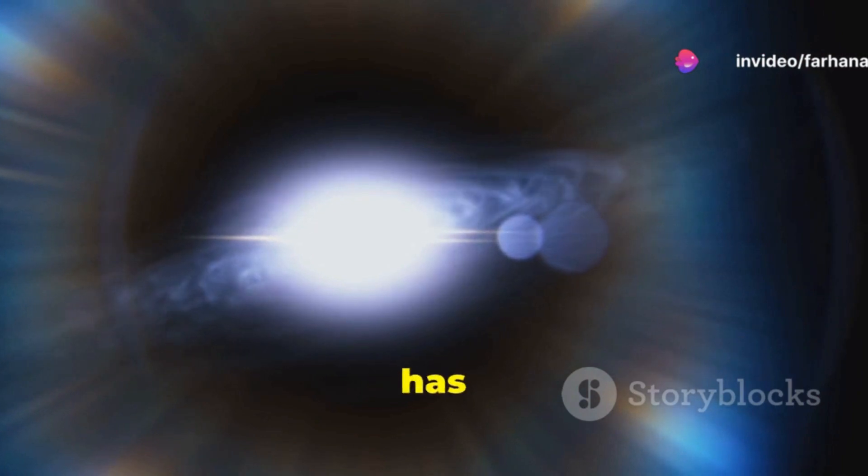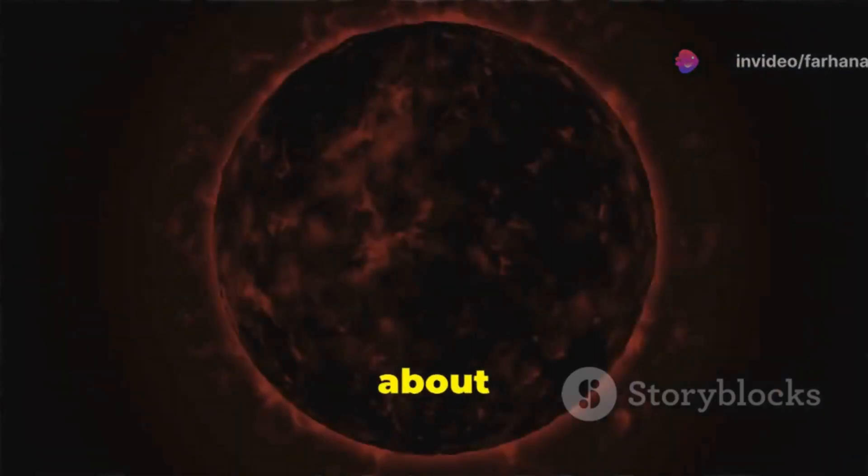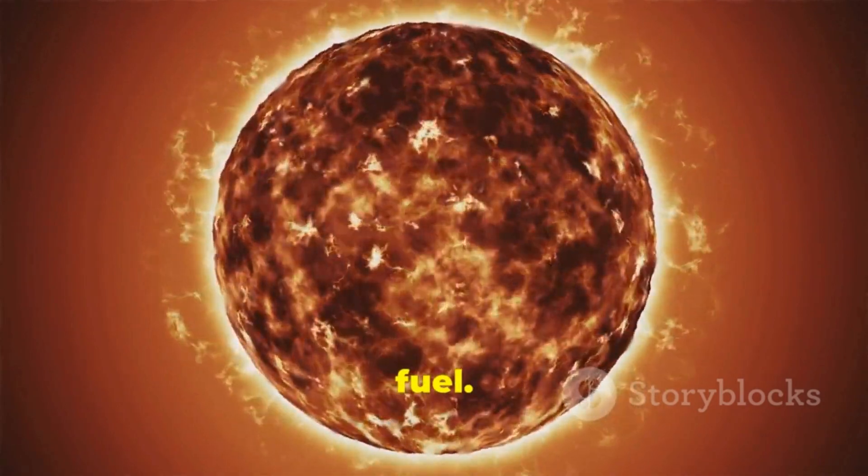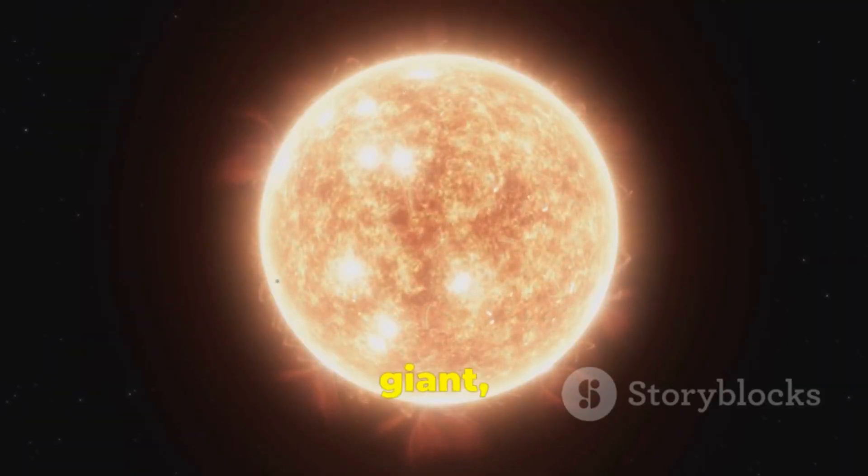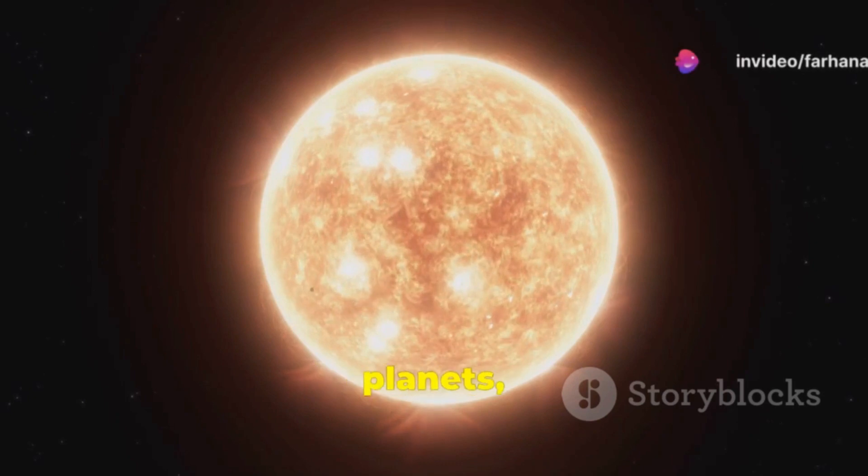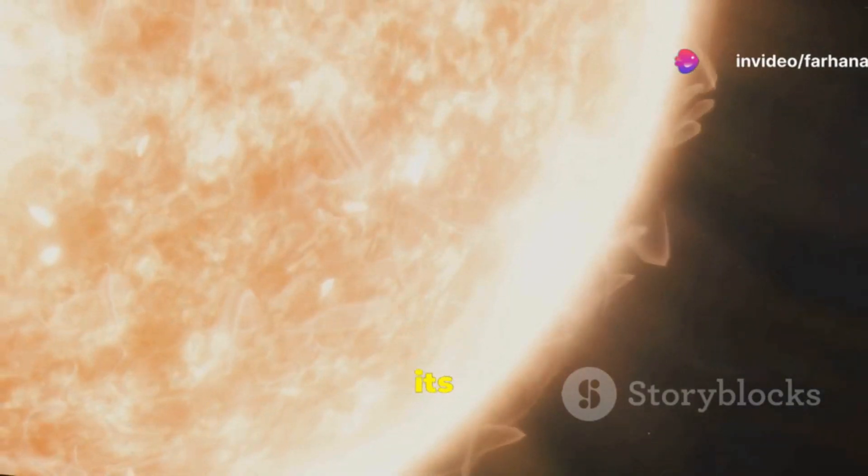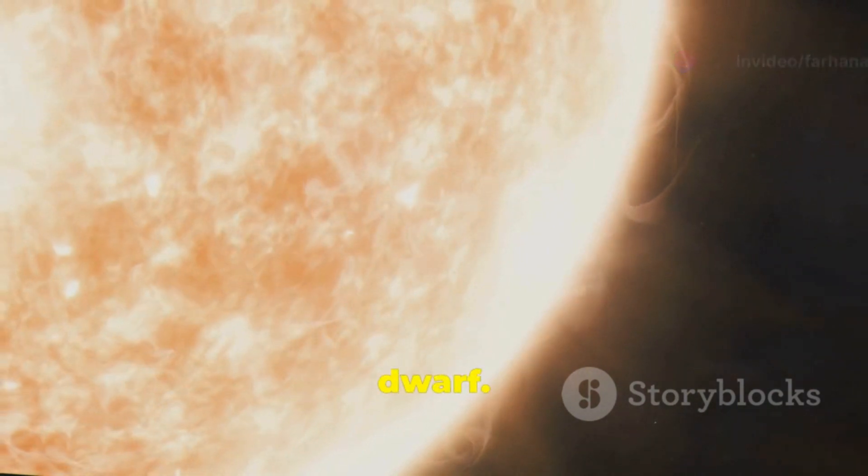Our own solar system has a finite lifespan. In about 5 billion years, the sun will run out of hydrogen fuel. It will expand into a red giant, engulfing the inner planets, including Earth. Eventually, the sun will shed its outer layers, leaving behind a white dwarf.